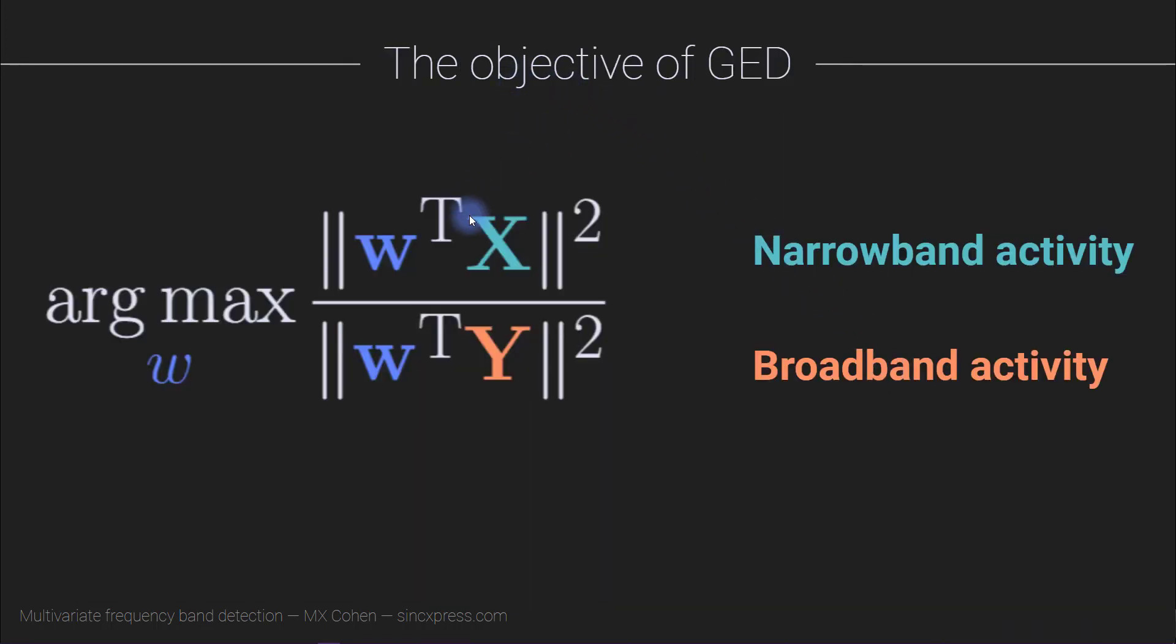So our objective here, our goal, is to identify a spatial filter W, a vector of filters for each data channel, such that the weighted combination of data channels, which gives us a component time series, has more energy for the narrowband signal relative to the broadband signal. This would be the variance or the norm of the narrowband signal, and this is the variance or the norm of the broadband signal. So we want to choose a vector W that maximizes this ratio here.